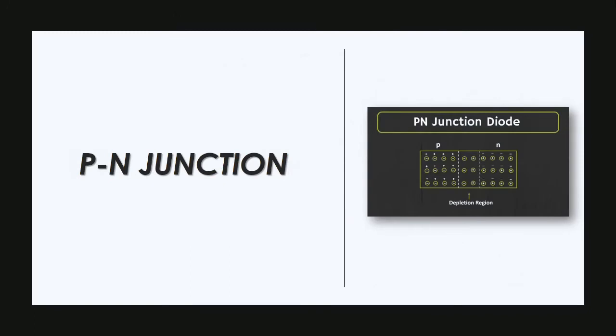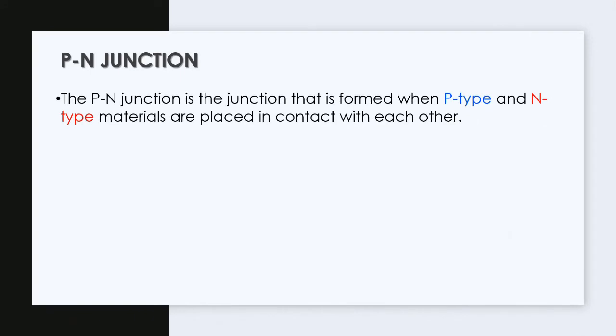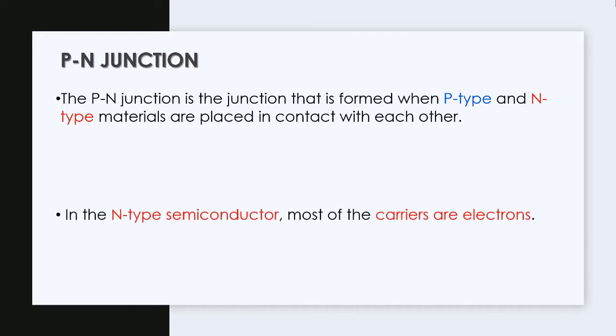Now that we know what a diode is and what is inside a diode, it will be easy for us to understand about PN junction. A PN junction is the junction that is formed when P-type and N-type materials are placed in contact with each other.